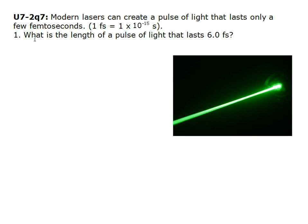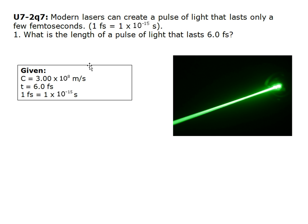Question 1: What is the length of a pulse of light that lasts 6.0 fs? Given: c equals 3.00 times 10 to the 8th m/s, t equals 6.0 fs, and 1 fs equals 1 times 10 to the negative 15 seconds.